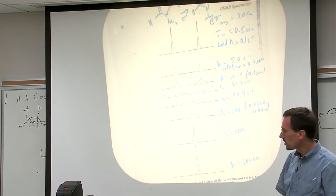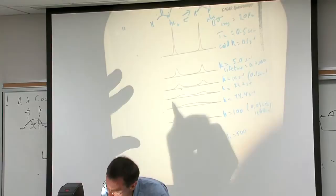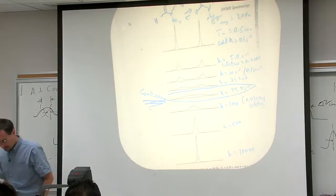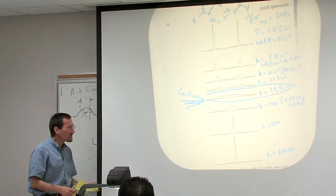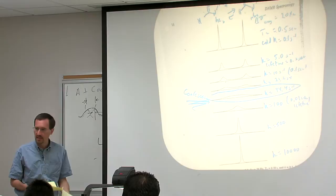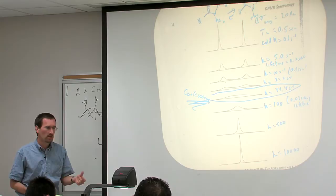At coalescence, the peaks just disappear — it's basically flat. This is perfect coalescence. Now what I want to do is show you a real example, show you how to get a rate out of this and then translate that into a free energy of activation.